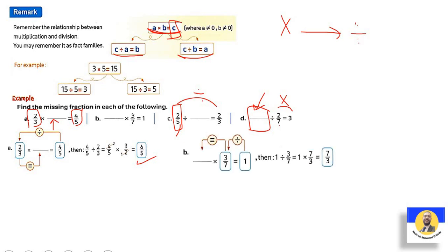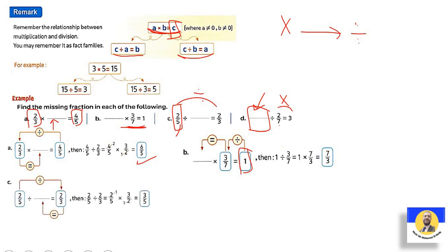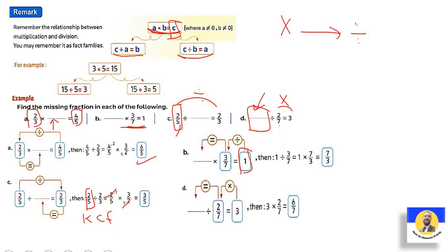Letter c: two-fifths divided by what equals four. The first number is present, so do division: two-fifths divided by two-thirds, using KCF: keep two-fifths, change to multiply, flip two-thirds to three-halves. Cancel two with two: answer is three-fifths. Letter d: the first number is missing, so multiply the two available numbers: two-sevenths times three gives six-sevenths.